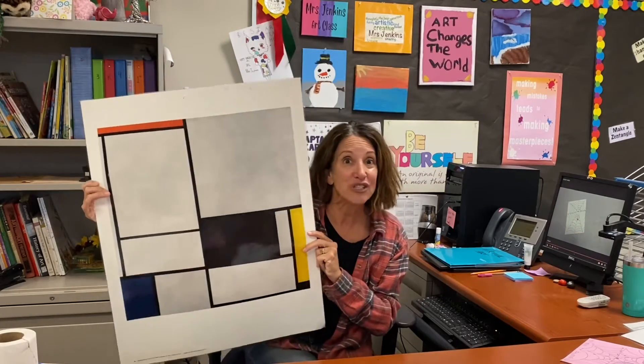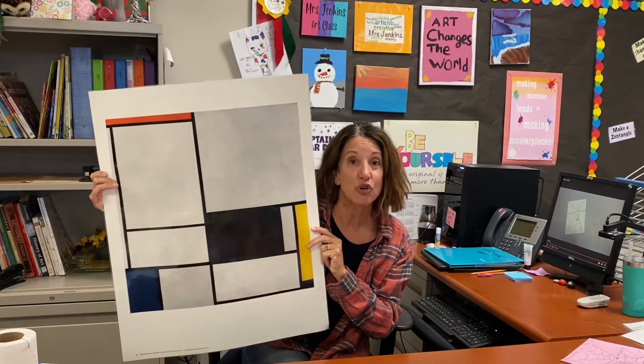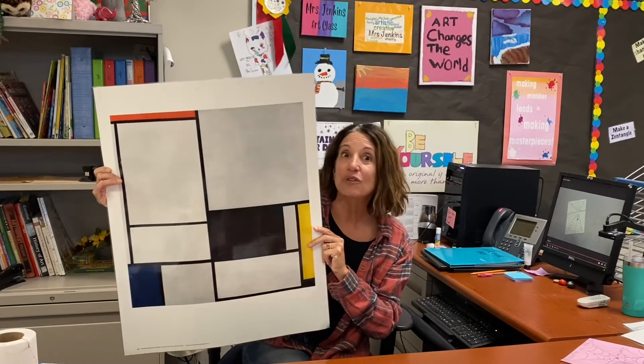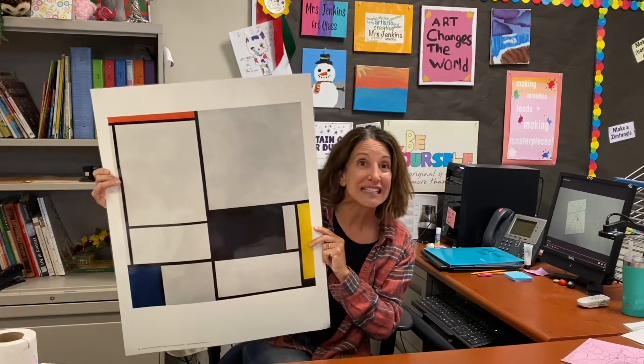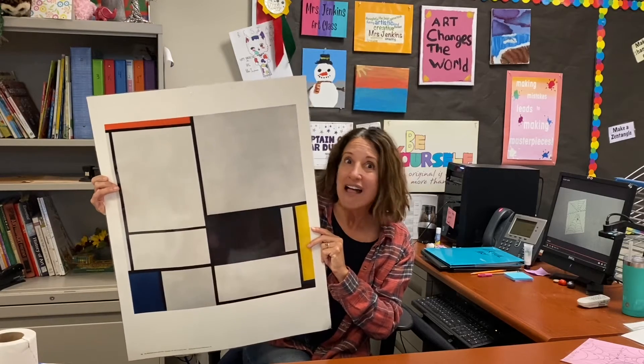The other thing he loved to use were primary colors which are red, yellow, and blue. And we're going to be using both of these materials to make our picture inspired by Piet Mondrian. Let's get started!